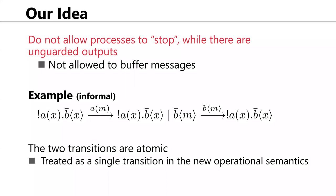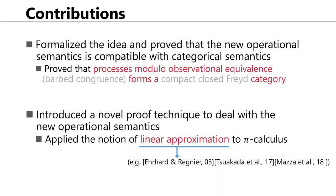Our idea is quite simple: we do not allow processes to stop while there are unguarded outputs. This can be thought of as disallowing buffering, since in the asynchronous pi calculus output actions are often considered as a communication medium that can buffer messages. We consider two transitions — receiving a message using an input, and sending the message using b — as atomic, treating them as a single transition in the new operational semantics, meaning there are no delays in between.